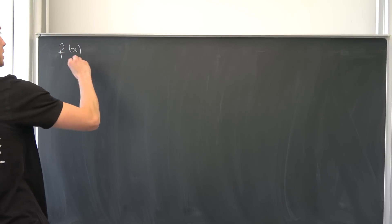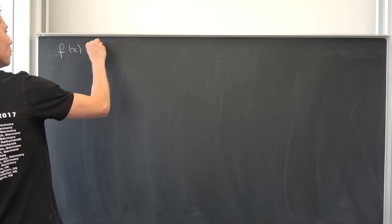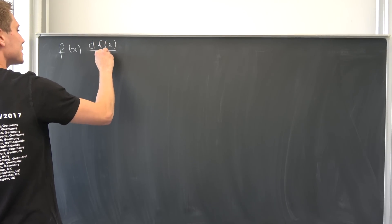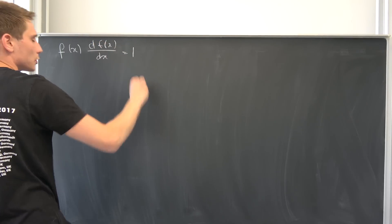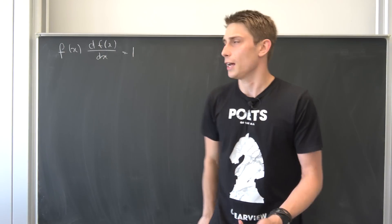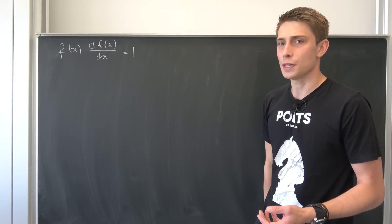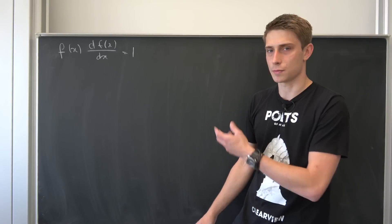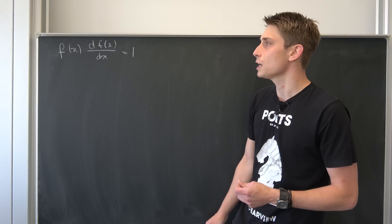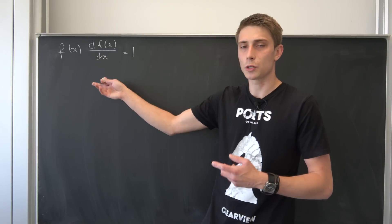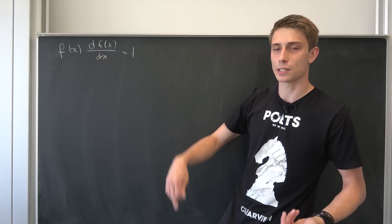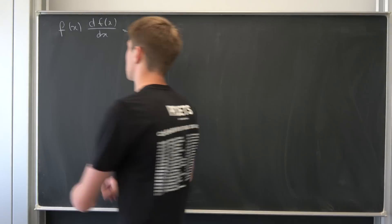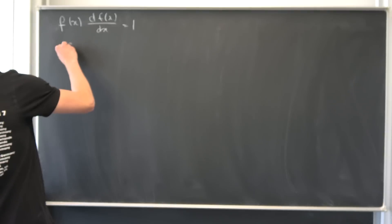We are having a function f of x, multiplying it by the derivative with respect to x, and we want to end up with 1. He also asked if this same function has the property that if we take its derivative and multiply it with its second derivative, we also end up with 1.